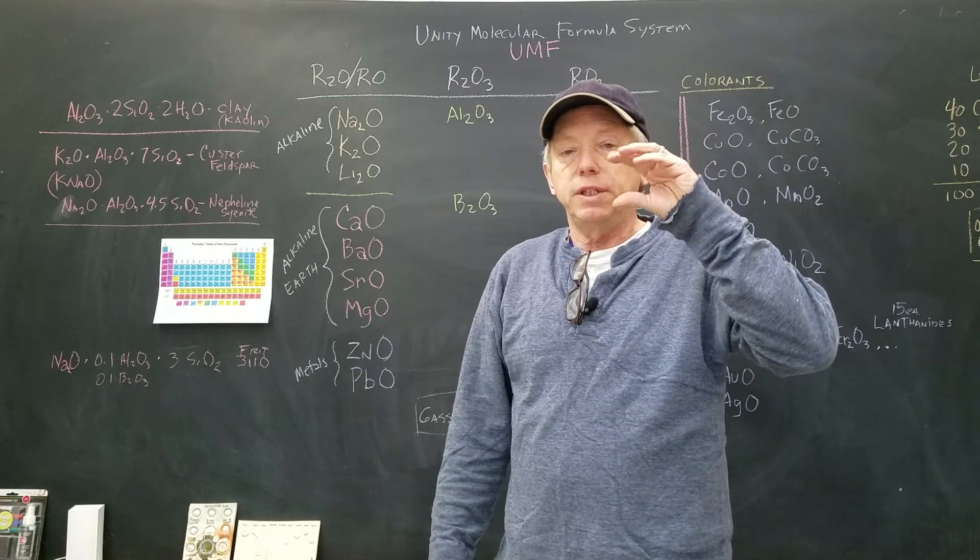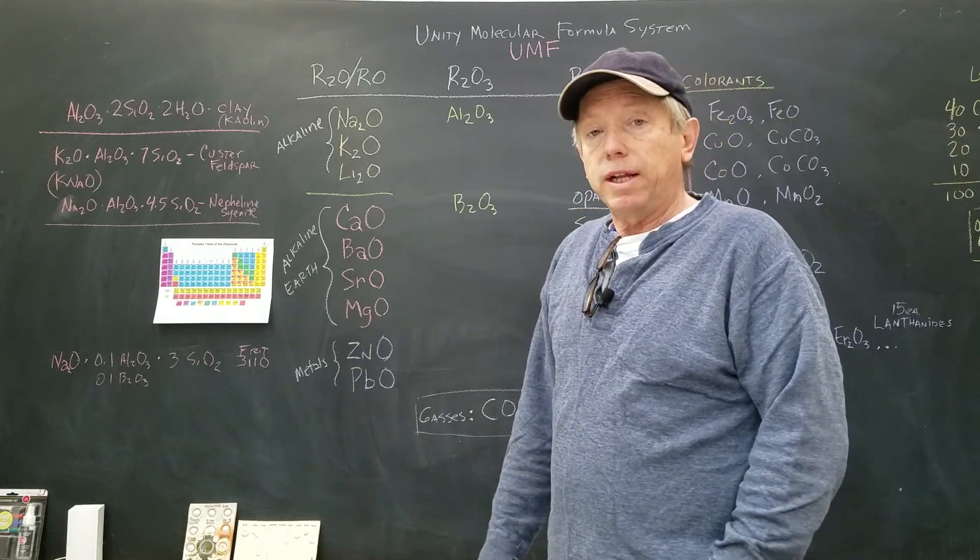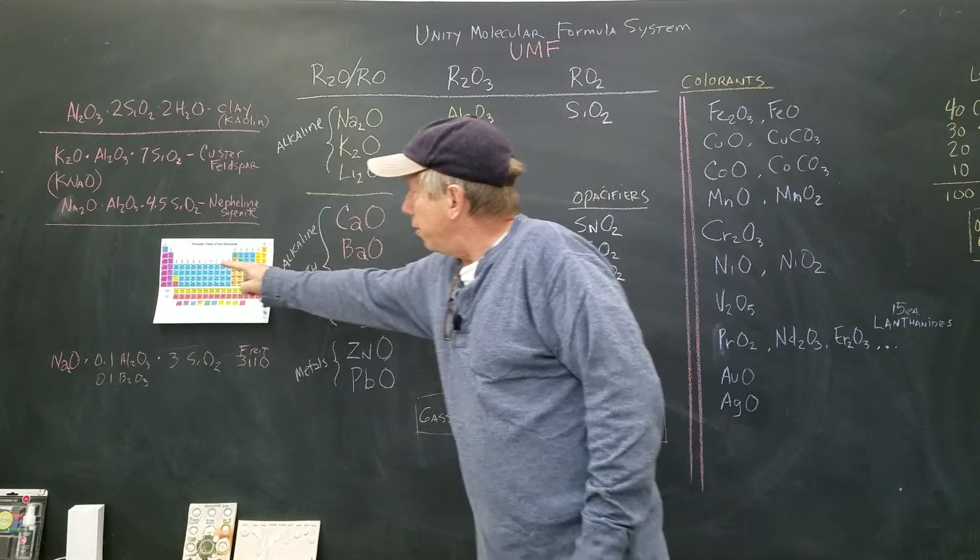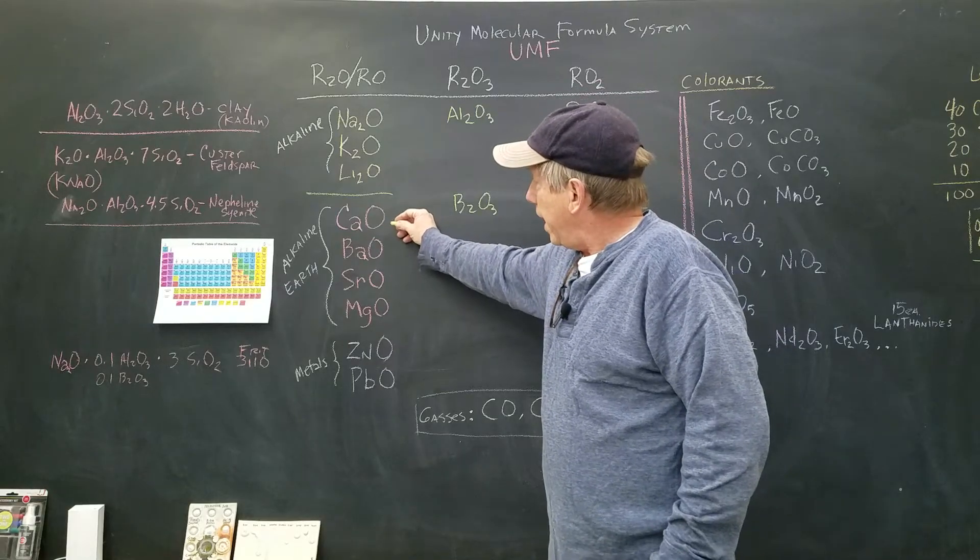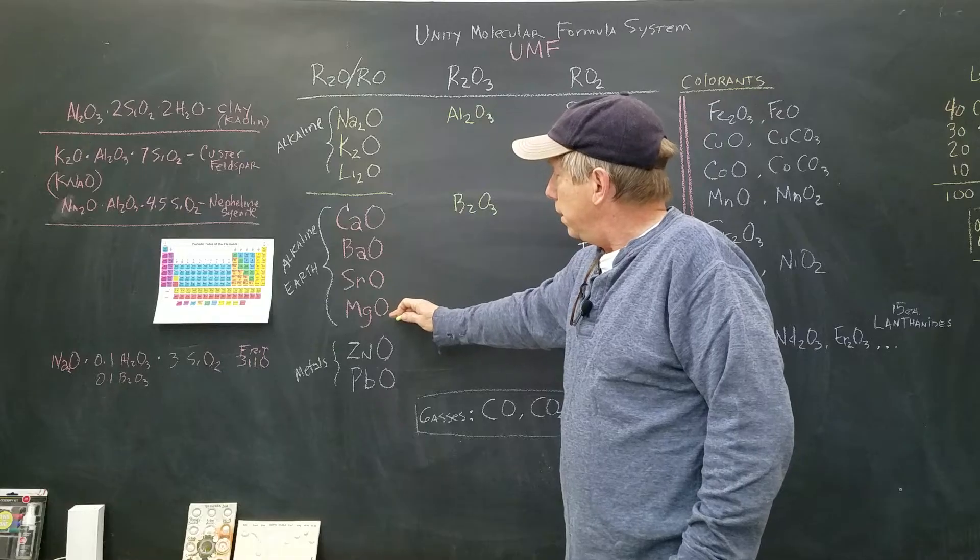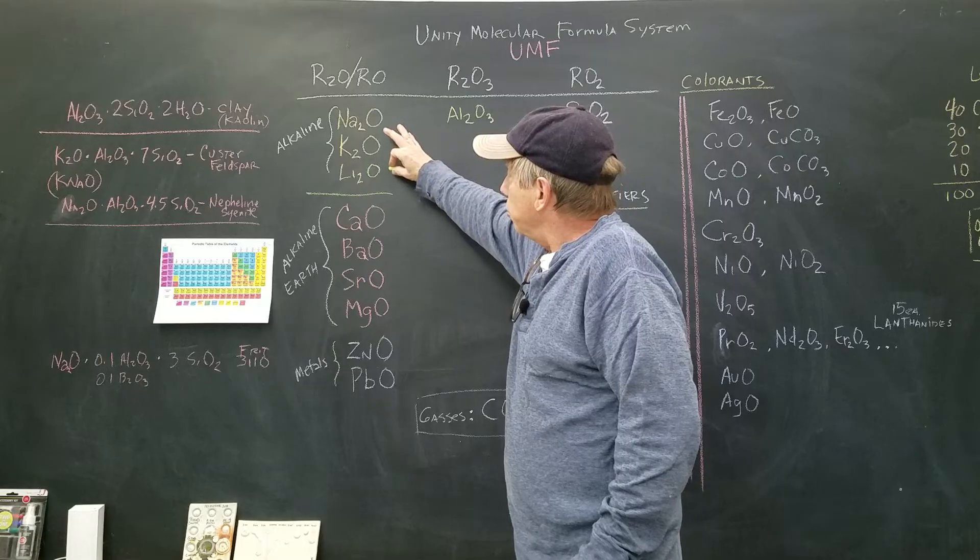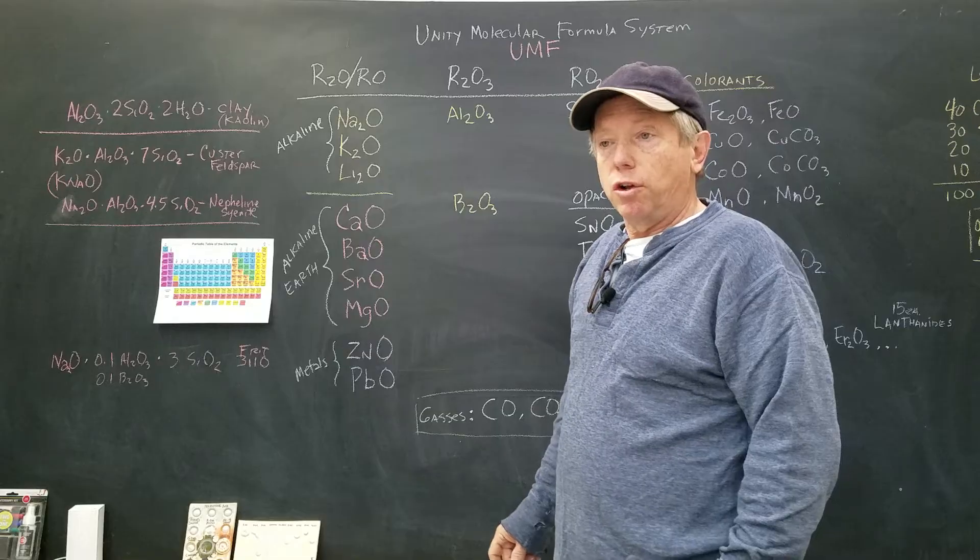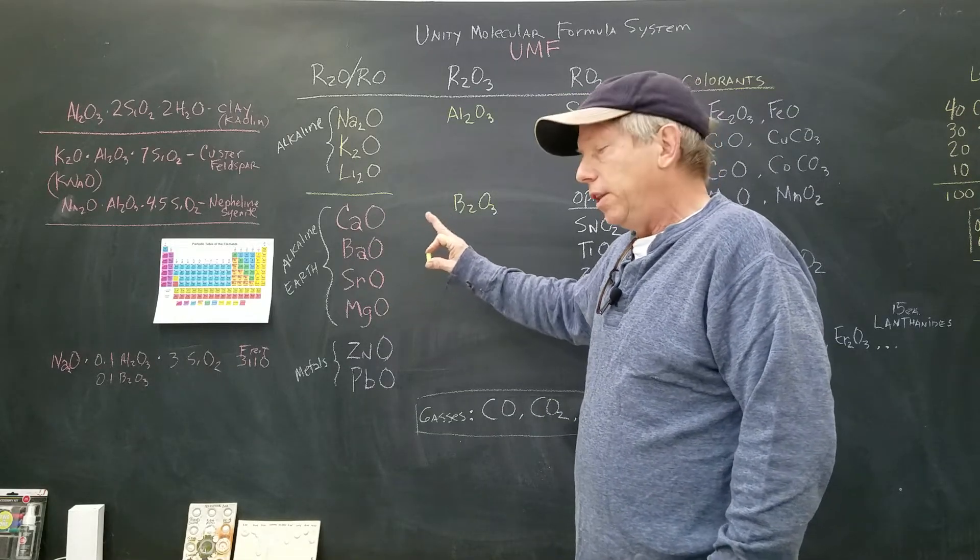They had figured out properties and ways to predict things by this periodic table. The next ones would be called the alkaline earth—that's the second column here. Calcium, barium, strontium, and magnesium. These are called alkaline earth. They all have certain properties. This group is very good melters.